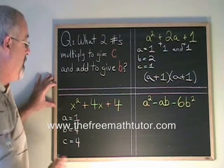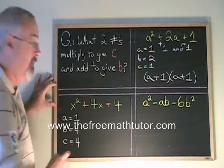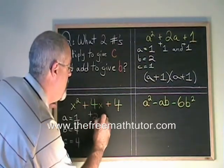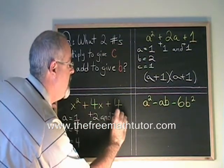What two numbers multiply to give 4 and add to give 4? They are positive 2 and positive 2.